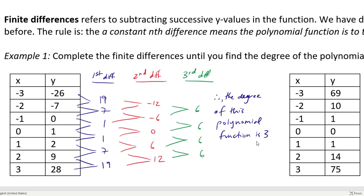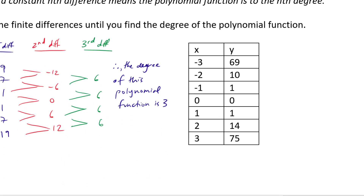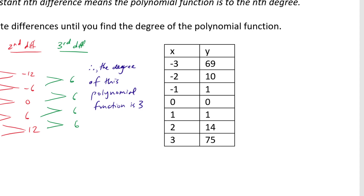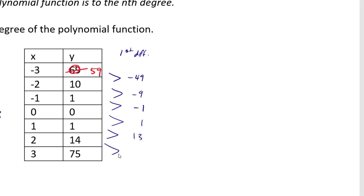Moving on to the next table — a quick correction: the first y-value shown as 69 should be corrected to 59. For first differences: negative 49, negative 9, negative 1, 1, 13, and 61. We don't have constant first differences, so let's try second differences.